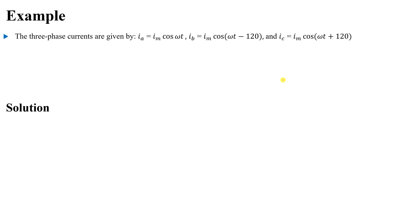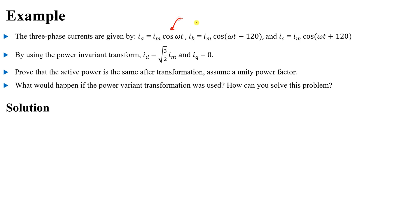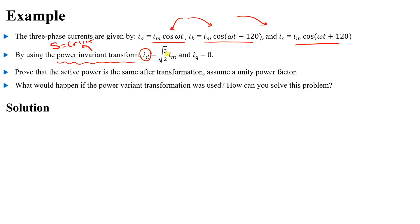From the previous example, we have three-phase currents: ia = Imax·cos(ωt), ib = Imax·cos(ωt − 120°), ic = Imax·cos(ωt + 120°). Using the power invariant transformation, where power is constant before and after transformation, we obtained that the magnitude of id is different from Imax of the phase — it equals the line-to-line RMS value — and iq equals zero.